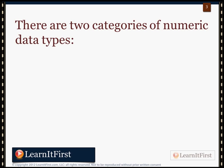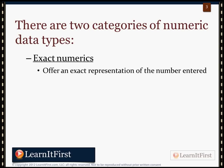Let's break it down into two different categories. You have exact numerics, and what we mean by exact numerics is you are returned the actual number that's stored in the database. If you provide the database with a number — 19, for example — you will get 19 in return. You're not going to get 19.00001. They are exact representations of the number. You see what's actually stored in the database.